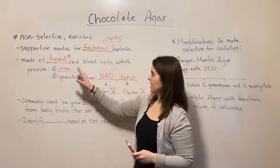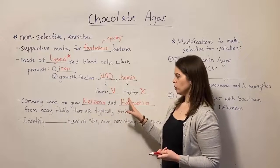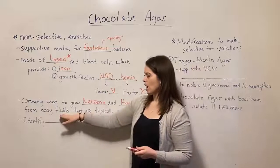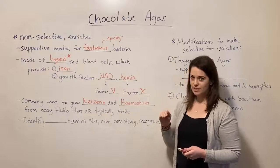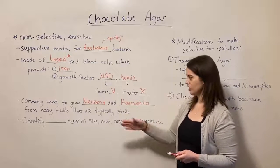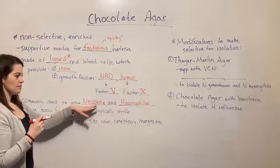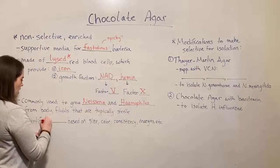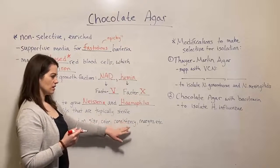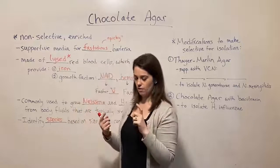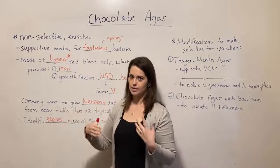Remember, chocolate agar is non-selective, meaning that a lot of things can grow on it. Specifically, we're using it to look for the growth of Neisseria species and Haemophilus species in body fluids that are typically sterile — think of things like blood or cerebrospinal fluid — to see if there is an infection caused by one of these bacteria. You can then identify the specific species by colony characteristics such as size, color, consistency, and margins, using visual inspection of the colonies.